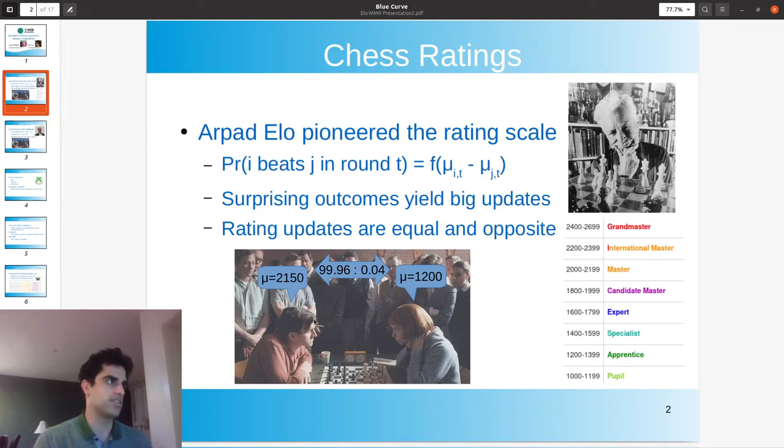So here, for example, if you've seen the Queen's Gambit, we have these players, Harry and Beth, playing against one another. And the more surprising the outcome of their match, the bigger the resulting rating updates. And of course, the winner always gains rating and the loser will lose an equal and opposite amount of rating points.